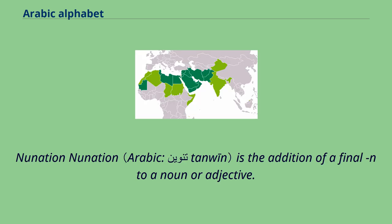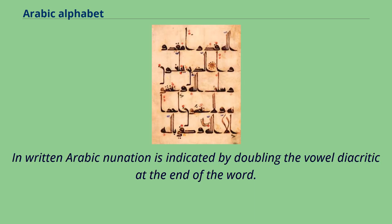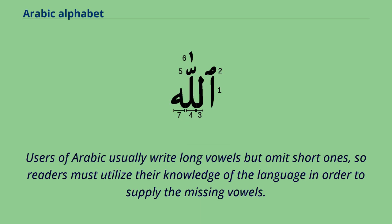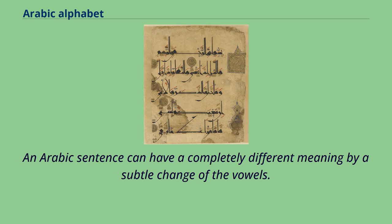Nunation is the addition of a final 'n' sound to a noun or adjective. The vowel before it indicates grammatical case. In written Arabic, nunation is indicated by doubling the vowel diacritic at the end of the word. Users of Arabic usually write long vowels but omit short ones, so readers must utilize their knowledge of the language in order to supply the missing vowels. An Arabic sentence can have a completely different meaning by a subtle change of the vowels.